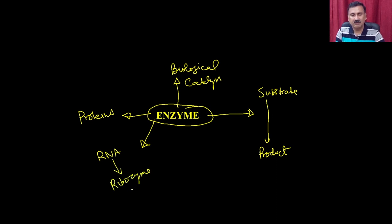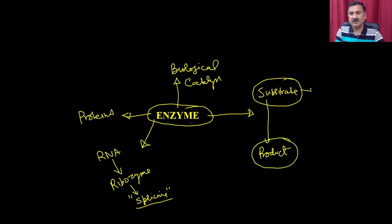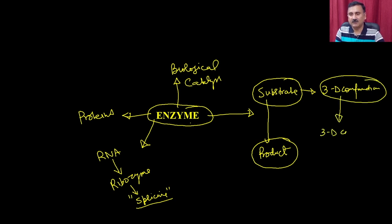Ribozymes are involved in a very crucial process called splicing, where they are actually removing the introns from the exons. That process we are going to take up when we discuss enzyme applications. In today's lecture, an enzyme processes the substrate into generating the product because the substrate has the required 3D conformations, and these 3D conformations are identified by the 3D conformations of the enzyme.